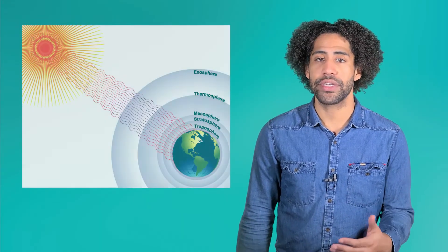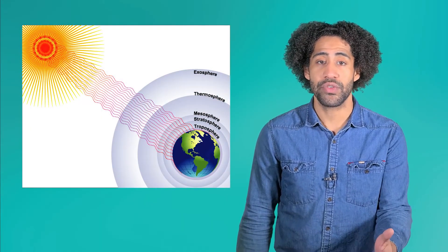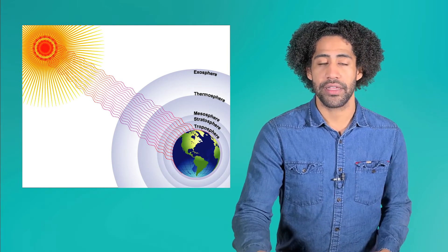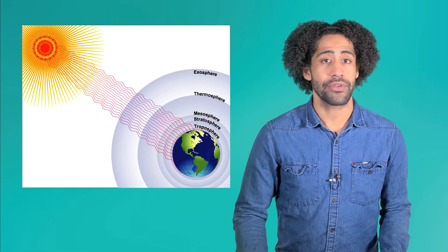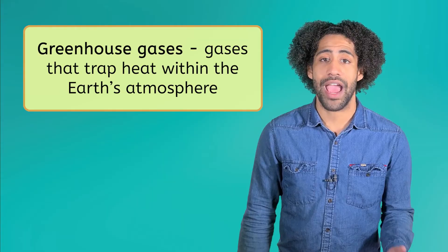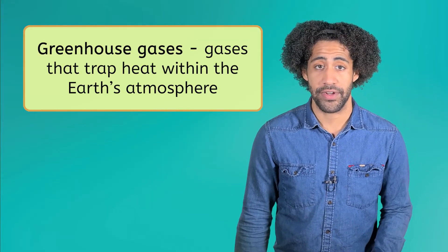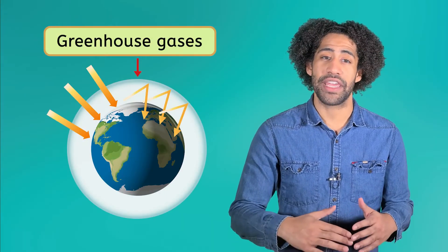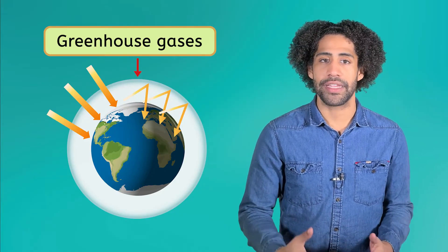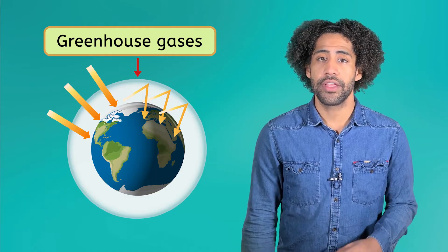But one of the biggest impacts of air pollution actually ties back to what we learned about heat transfer in the different layers of the atmosphere. Some pollutants, like carbon dioxide, are often called greenhouse gases. Greenhouse gases are gases that trap heat within the Earth's atmosphere. The Earth naturally has a thin layer of greenhouse gases that trap heat and keep the planet's temperature consistent.